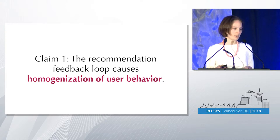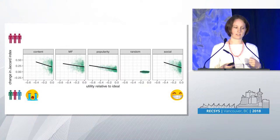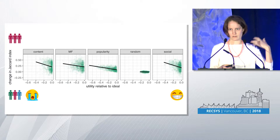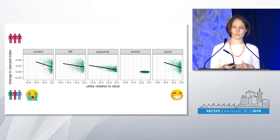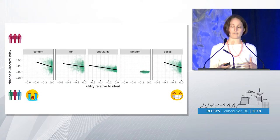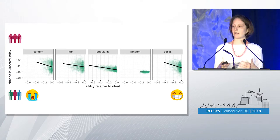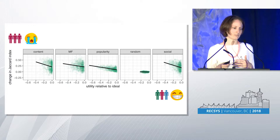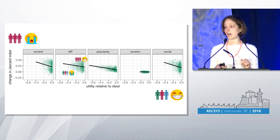This leads to our first claim: the recommendation feedback loop causes homogenization in user behavior. We also wanted to look at how homogenization relates to utility. Plotting the same y-axis of homogenization against utility, the general pattern is that users with high homogenization tend to have lower utility, while closer-to-ideal utility corresponds to lower homogenization. The general trend is that users experience losses in utility due to homogenization effects.